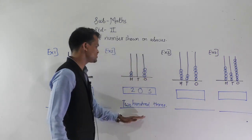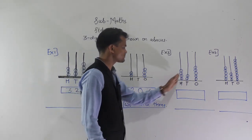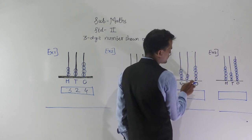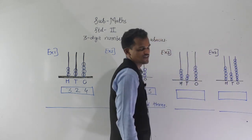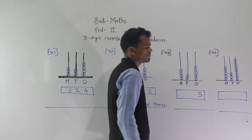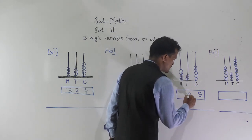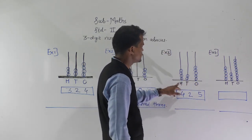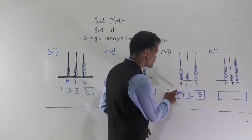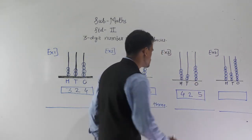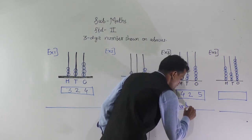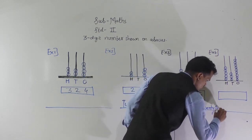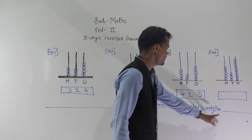In the third example, start from the extreme right side and count the beads. In the ones place spike there are five beads, so write five. In the tens place spike there are two beads, so write two. In the hundreds place spike there are four beads, indicating four hundreds. So the number is four hundred and twenty five.